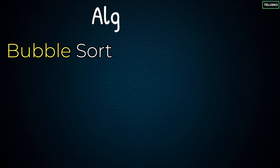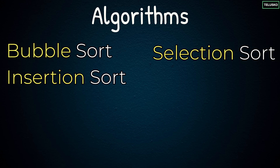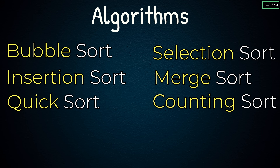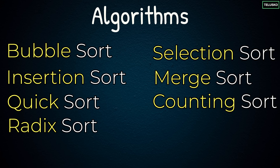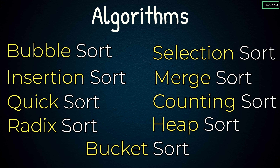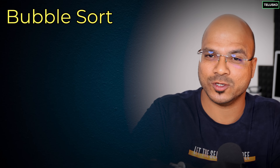There are also algorithms that are a bit difficult but very efficient when you have a huge amount of data. When you talk about sorting, there are different options: bubble sort, selection sort, insertion sort, merge sort, quick sort, counting sort, radix, heap sort, bucket sort, and many more. The famous ones are bubble sort, quick sort, selection sort, insertion sort, and merge sort. Let's start with the first one — bubble sort.